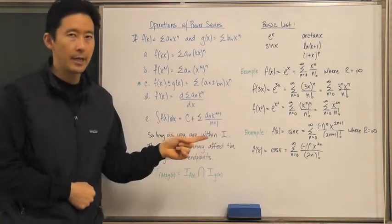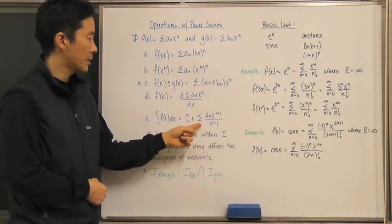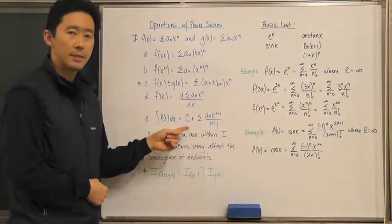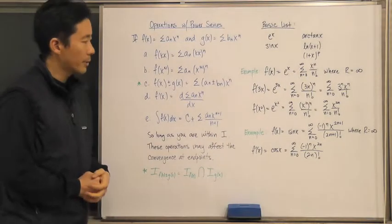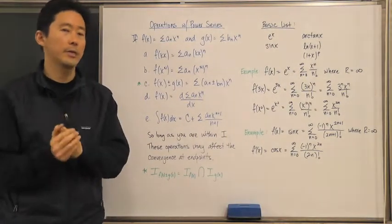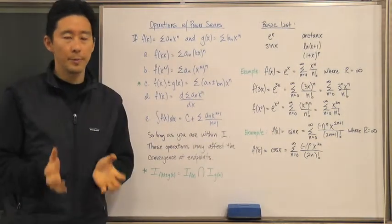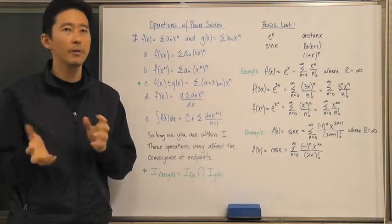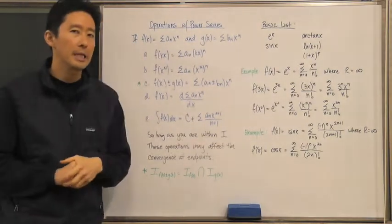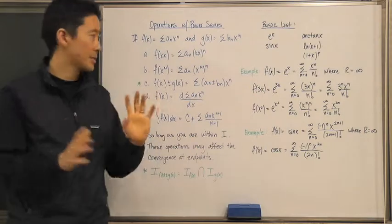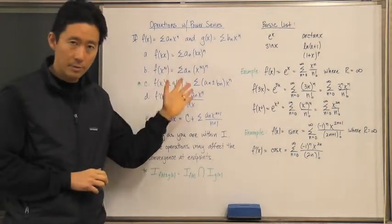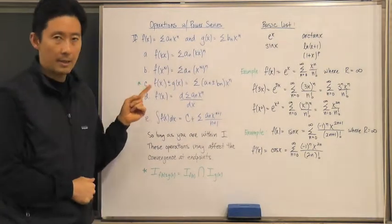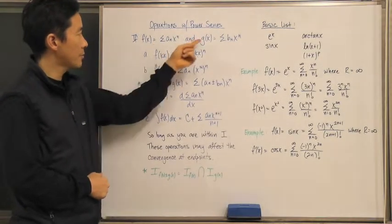We can also take the derivative or the integral of a power series. The integral looks slightly different because we perform anti-differentiation, and we also incorporate the constant of integration. Throughout this entire process, we have to make sure that we remain within the interval of convergence, because that is the only place where the power series expansion and the function are actually equal.